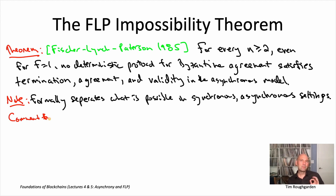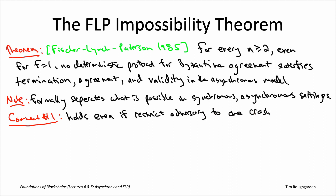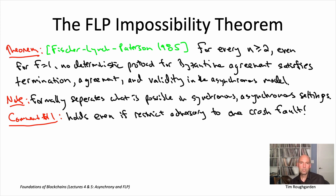Two more comments about the theorem. Comment one: I'm actually underselling the traditional FLP impossibility result. I've stated it for up to one Byzantine node, but this impossibility result holds even with the most benign imaginable type of non-honest node: a crash fault, where a node runs honestly for some period of time and then just goes down and never participates again. Even under the threat of merely one crash fault, there is no deterministic Byzantine agreement protocol in the asynchronous model satisfying these three properties. I'll prove it using a Byzantine node since it's simpler, but extending the argument to crash faults is a slight extension I encourage you to think through.